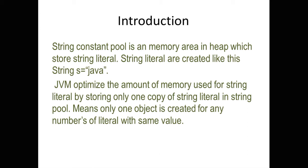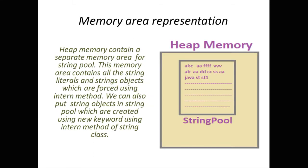Whenever we create a string using string literals, like string s equal to something, those strings will automatically be stored into the string pool. If we have 20 strings with the value Java which are string literals, all those literals have only one object created. The string pool won't create a new object for string literals; it provides the reference of the object which has the same value.